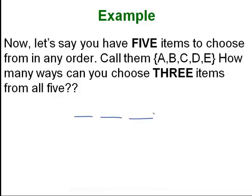We're going to have three dashes because we're making three choices. The number of dashes equals the number of choices we're making, not how many things we're choosing from. So with three dashes: you have five choices for your first trophy, then four, then three. You multiply those together and get 60 different ways you can pick and rearrange three trophies.